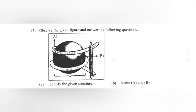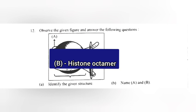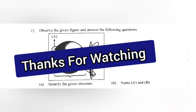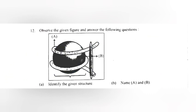Question 13: Observe the given figure and answer the following questions. Identify the given structure. Answer: Nucleosome. Name A and B. A — DNA. B — Histone octamer.